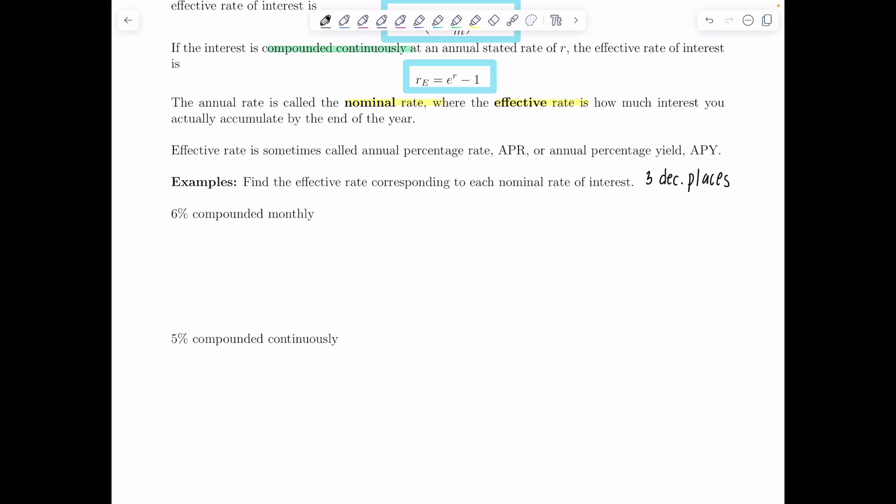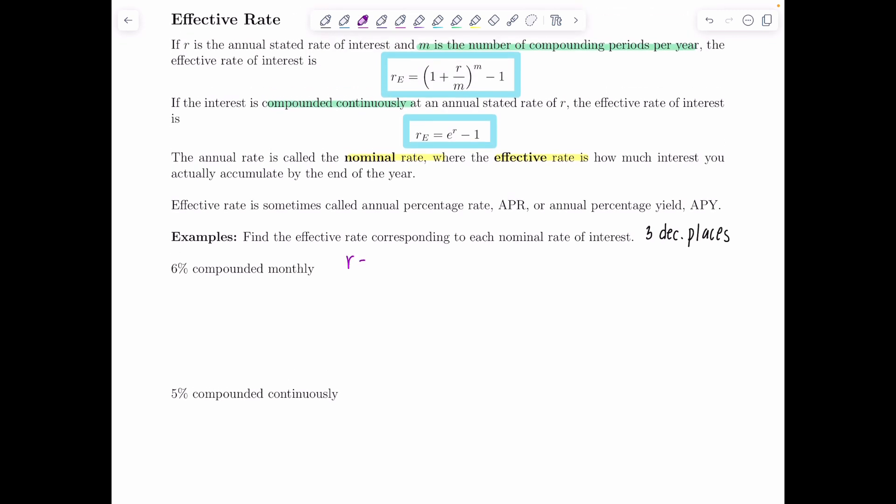Let's find the effective rate of interest for six percent compounded monthly. So six percent means R is equal to 0.06 and monthly means M, the number of times the interest is compounded in a year, is 12. So my effective rate of interest R sub E is going to be one plus 0.06 divided by 12 raised to the 12 minus one.